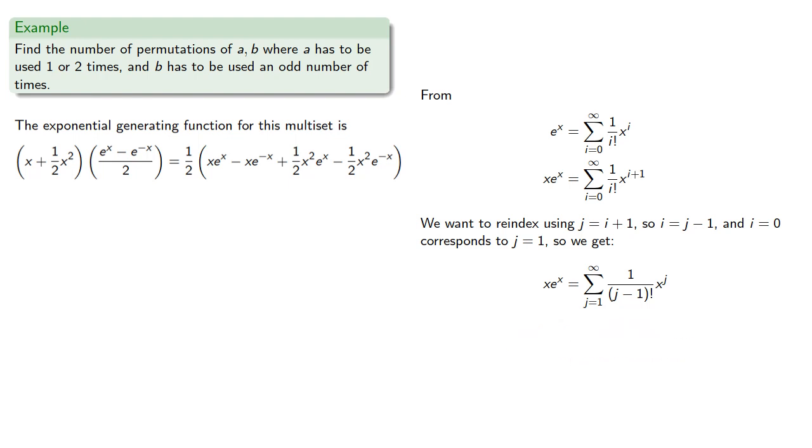Now, while this is indexed in j, the name of the index variable doesn't actually matter, so we'll rename it i and get our power series for x e to the x. And so we can replace that in our expression.